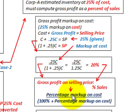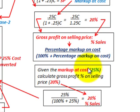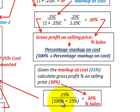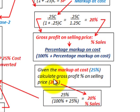The formula to convert markup on cost to gross profit on selling price is: percentage markup on cost divided by (100% plus the percentage markup on cost). Given a 25% markup on cost, that's 25% ÷ 125% = 20% gross profit based on selling price. This is the conversion we need to match our sales figures.